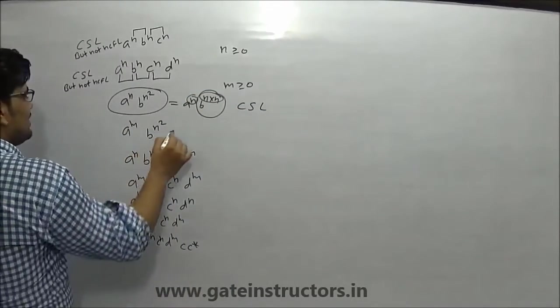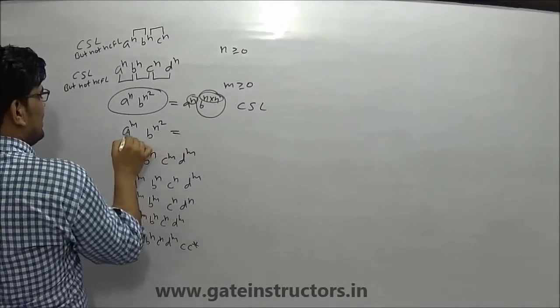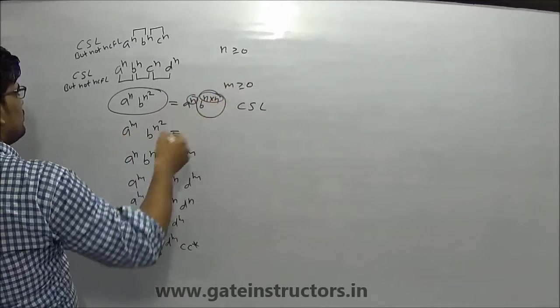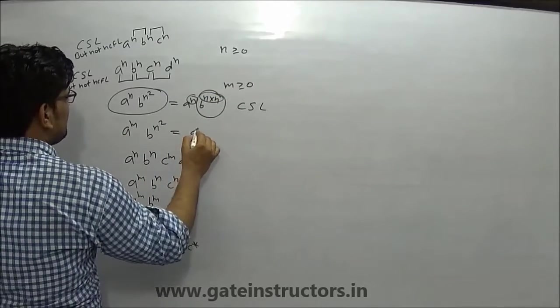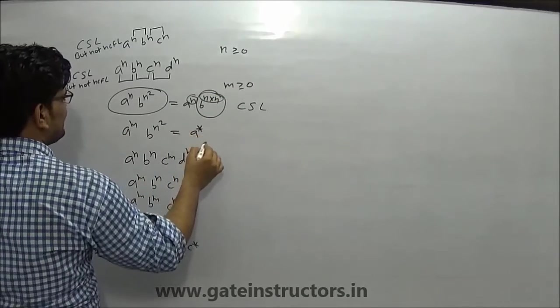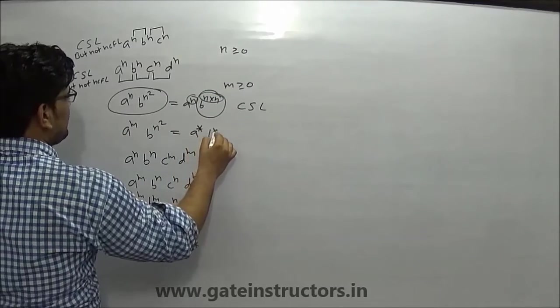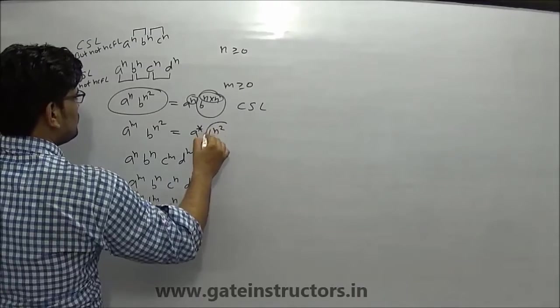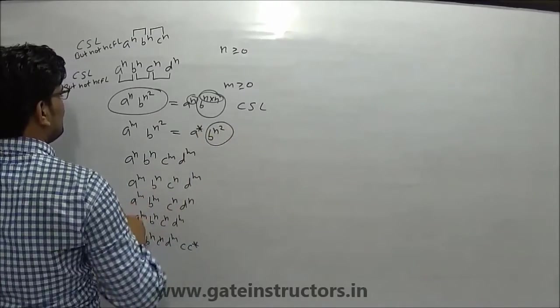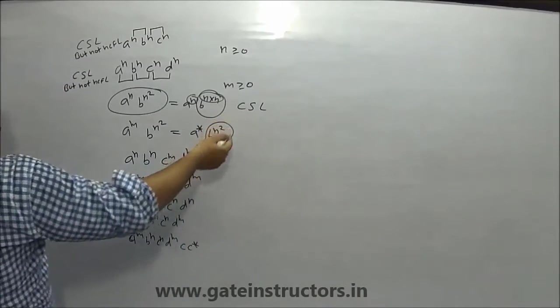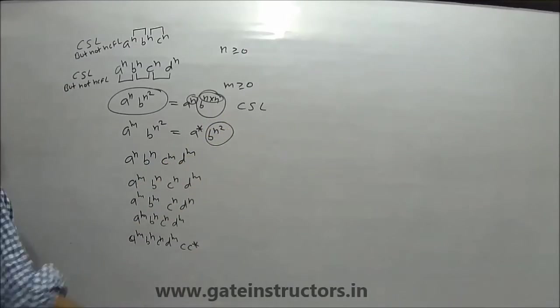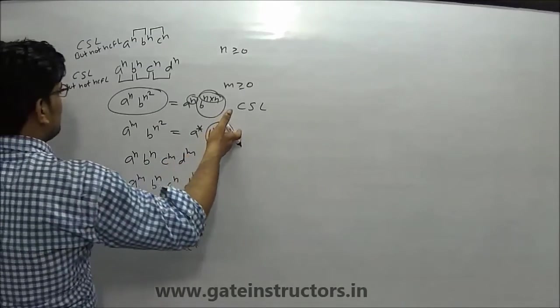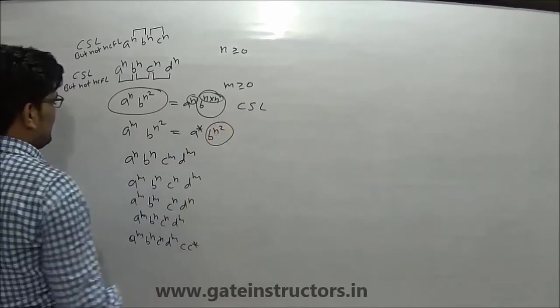Okay, this is the same way. If you have a data equal to 0, I can write it as a, b, n². But since it is non-linear power, this will be CSL but not NCFL.